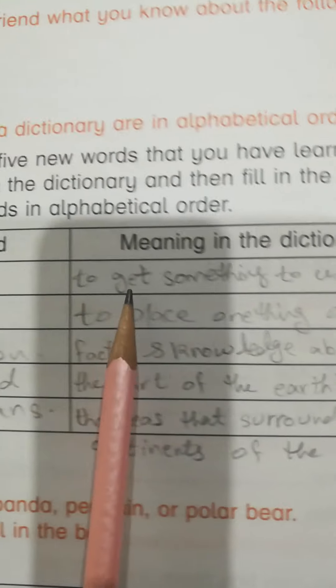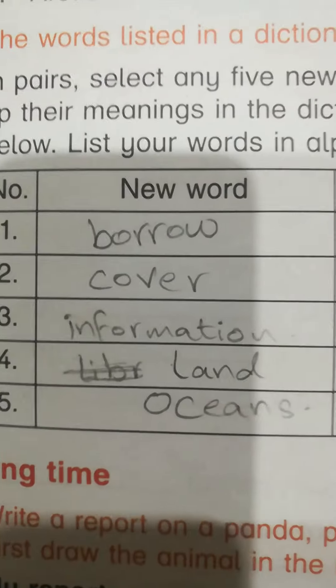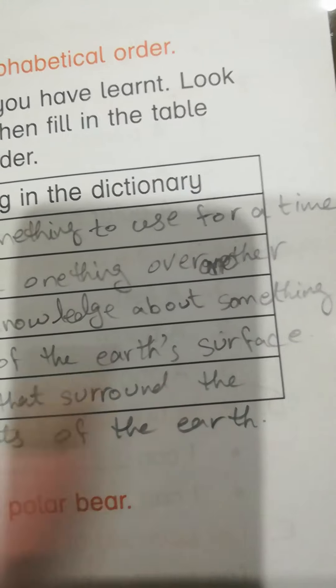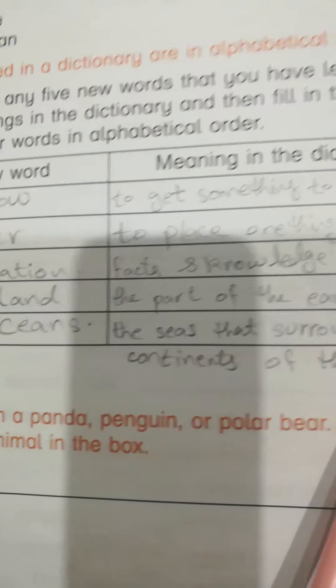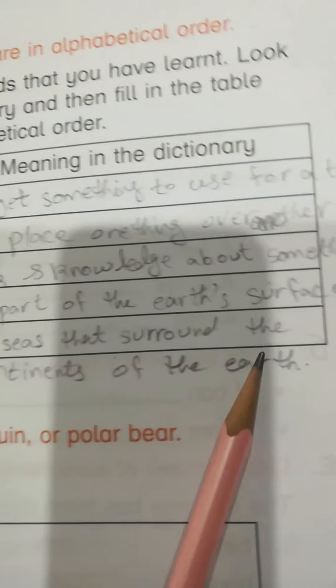Borrow: to get something to use for a time. Cover: to place one thing over another. Third word — facts and knowledge about something. Fourth, Land: the part of the earth's surface. Fifth, Oceans: the seas that surround the continents of the earth.